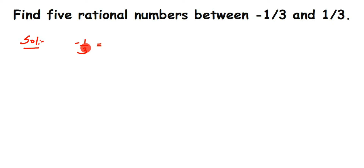You can multiply by any number — the greater the number, the greater the gap, and the more rational numbers you can pick. Since they're asking us to find five, take a number greater than five. Don't take five or less, as the gap won't be enough. I'm going to take 10. It's not mandatory to use 10 — I'm choosing it because it's easy to multiply. You can take any other number; just make sure the multiplication is easy.